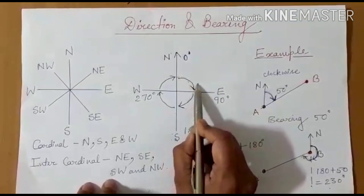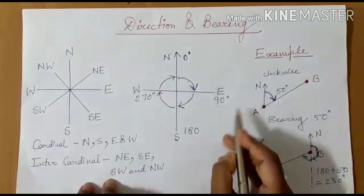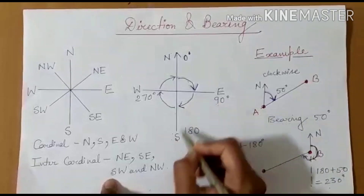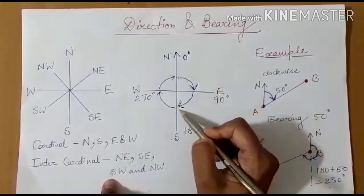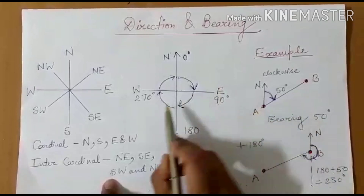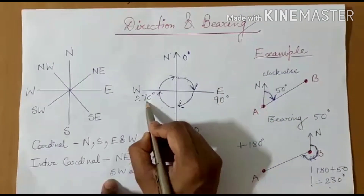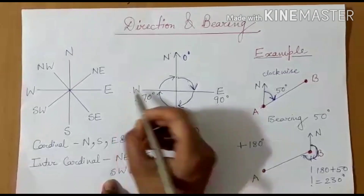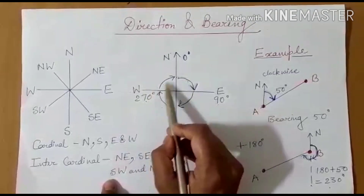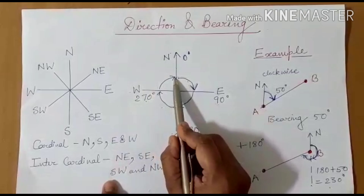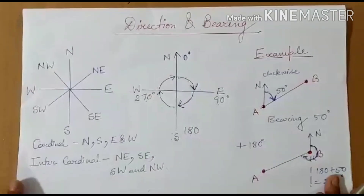As we move from north to east, it is 90 degrees. From east to south, another 90 is added, making 180 degrees. Another 90 added to 180 degrees becomes 270 degrees when it reaches west. Finally, it completes the loop and becomes 360 degrees. So the whole angle is 360 degrees.